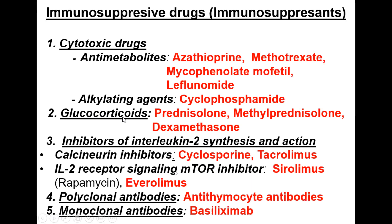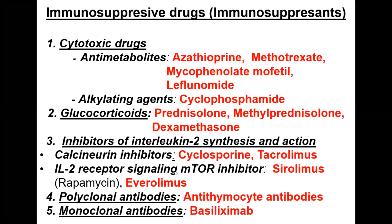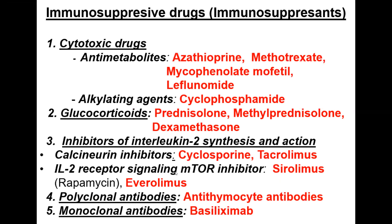Glucocorticoids inhibit expression of both interleukin-2 and interleukin-4, giving immunodepressant effects on both cellular and humoral immunity, though with predominant action on cellular immunity. Cytotoxic drugs inhibit both humoral and cellular immunity non-selectively, which is why they cause serious adverse effects.